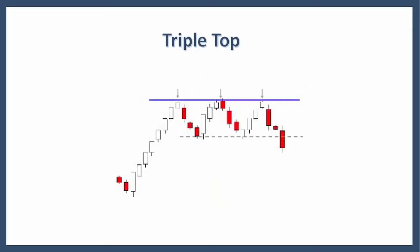The triple top reversal is a bearish reversal pattern typically found on bar charts, line charts, and candlestick charts. There are three equal highs followed by a breakdown below support. As a major reversal pattern, this pattern usually develops over a three to six month period. Now let's examine each part of the pattern and then we'll take a look at an example.